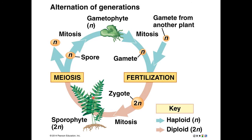This fern will have structures called sporangia — not shown here — that will produce spores. These spores are produced by the process of meiosis. When meiosis occurs, it takes a diploid cell and makes it haploid, so we now have haploid spores. But they don't just stay as a single cell.